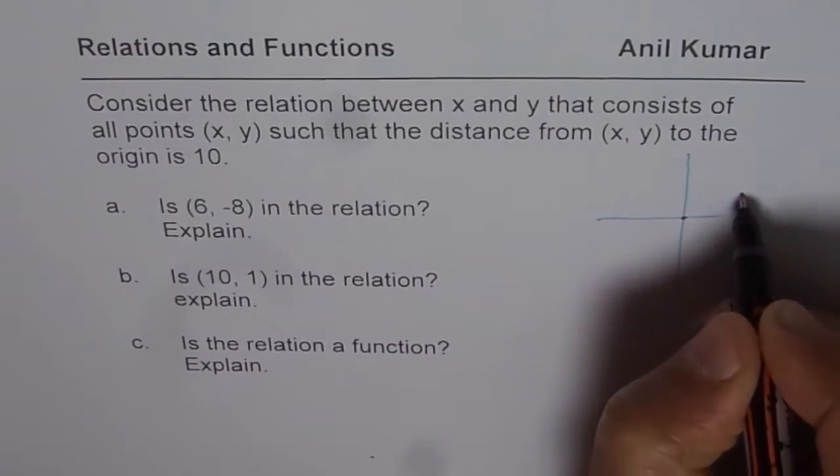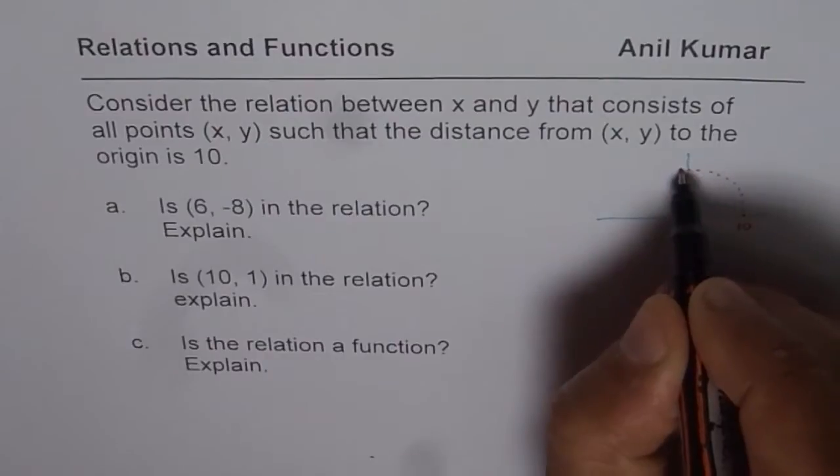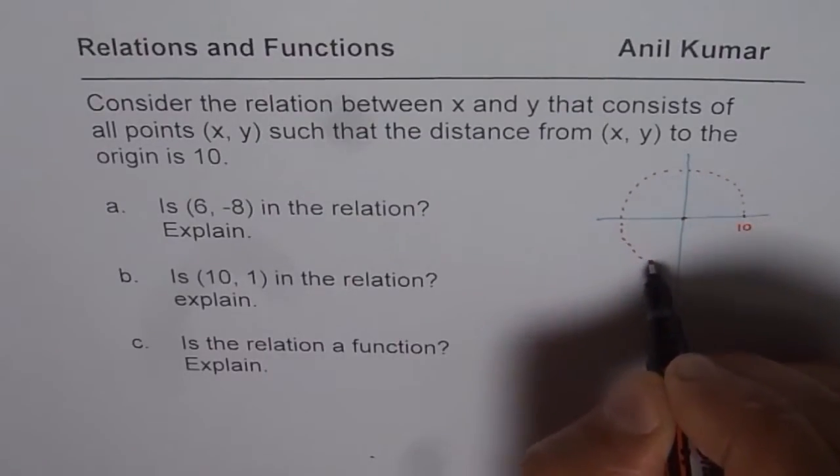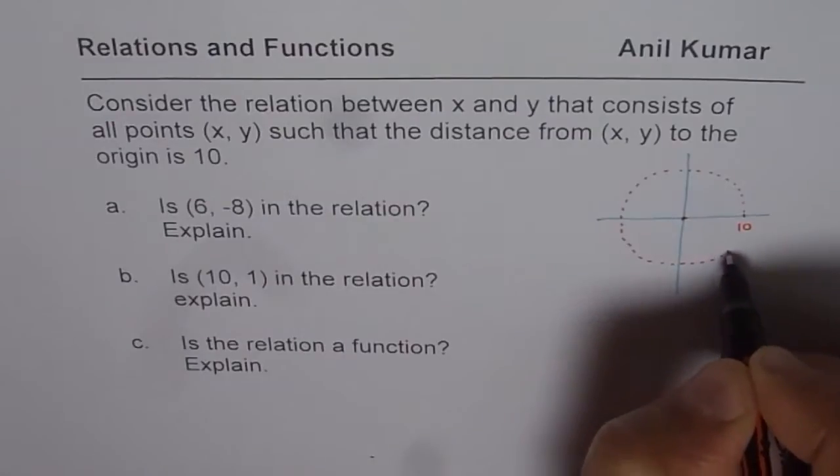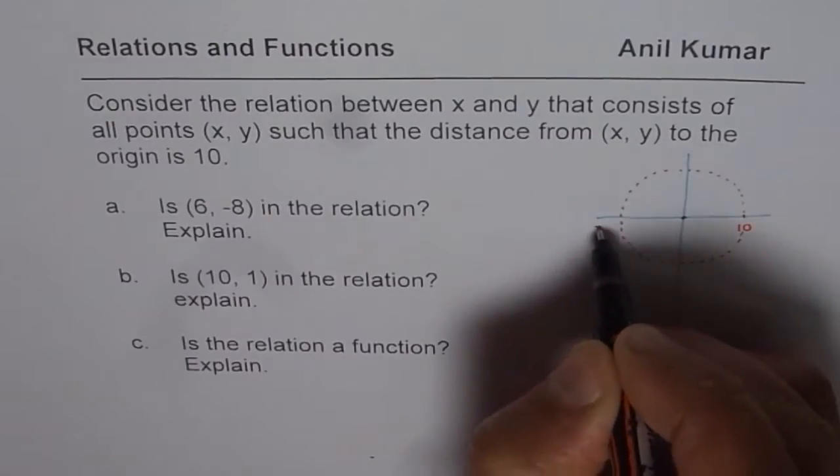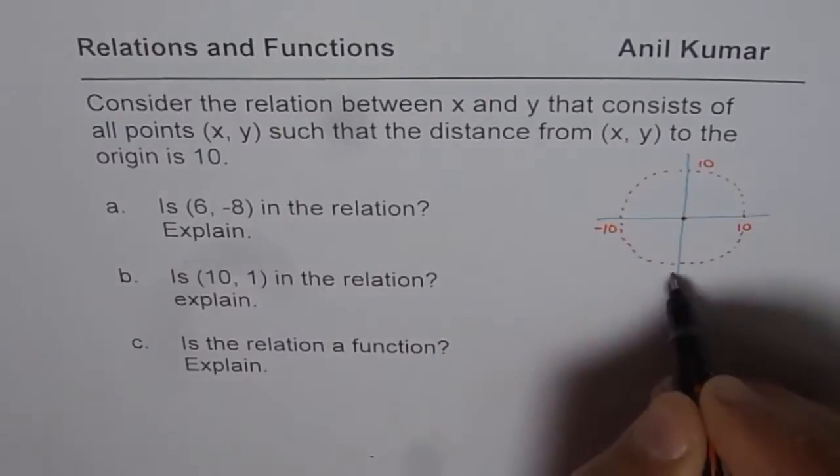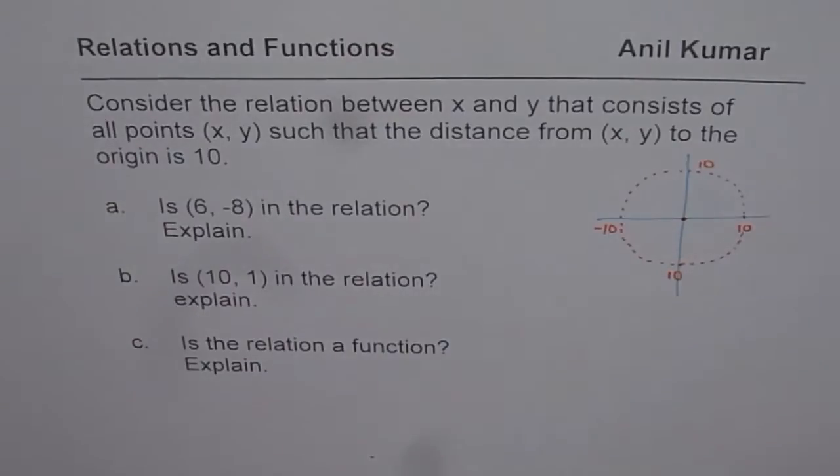So, 10 units from the origin. If you take all points which are 10 units from the origin, you land up with a circle. Do you see that? It's kind of like this. This is 10 units from the origin. This is also 10 units. This is also 10 units. So that is the situation.